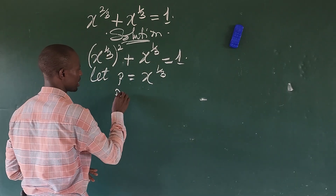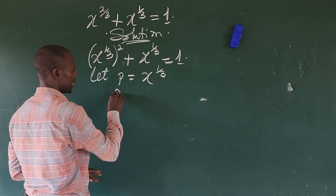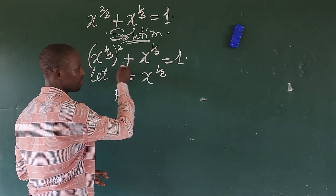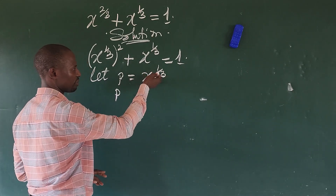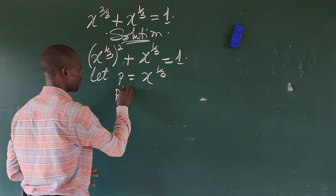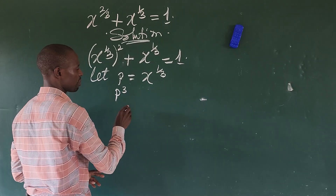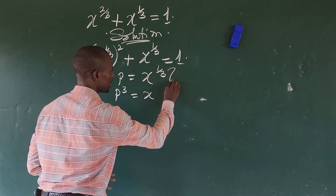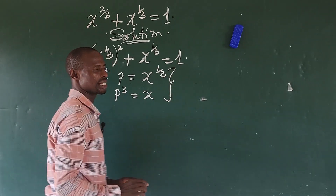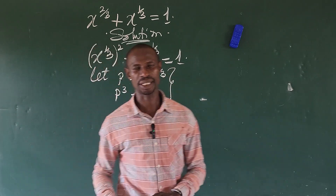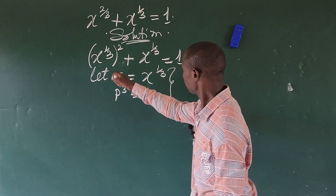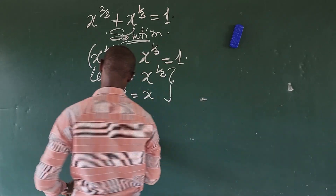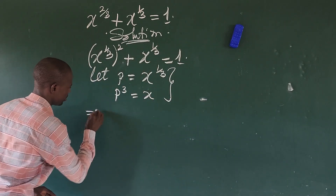This implies we have to cube both sides of this equation to make x stand on its own. So we're going to have p to the power of three is equal to x. Let's hold these equations and go ahead.